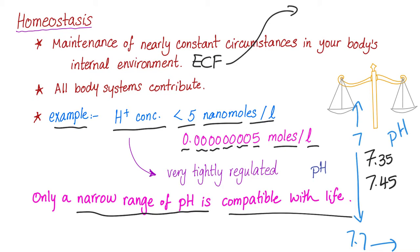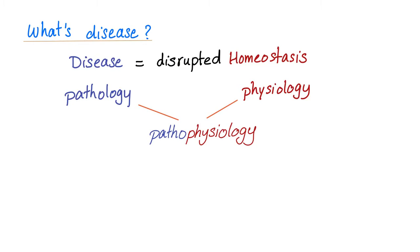These numbers are not actual numbers — the pH is a logarithm. So they are very tiny amounts of hydrogen. Any excess, any decrease, and you're done. So homeostasis is very serious.